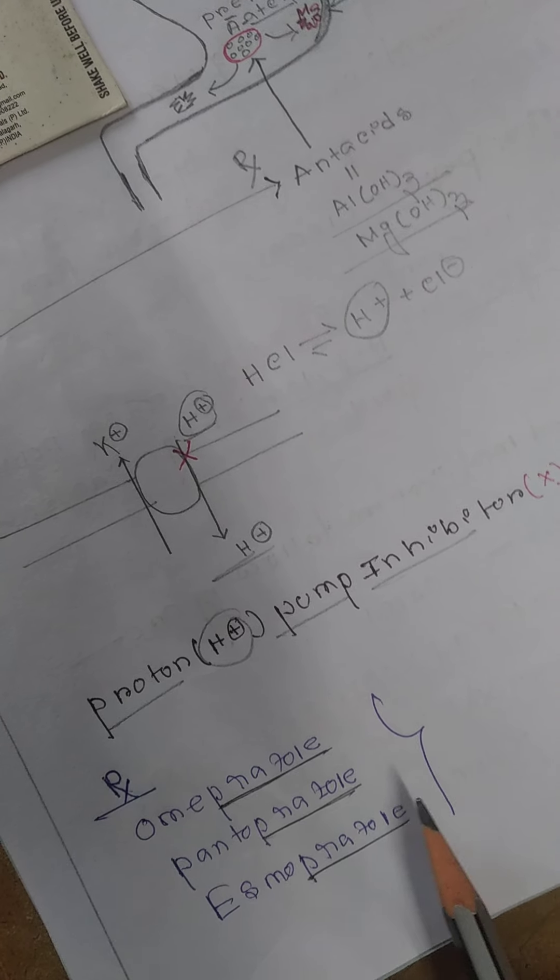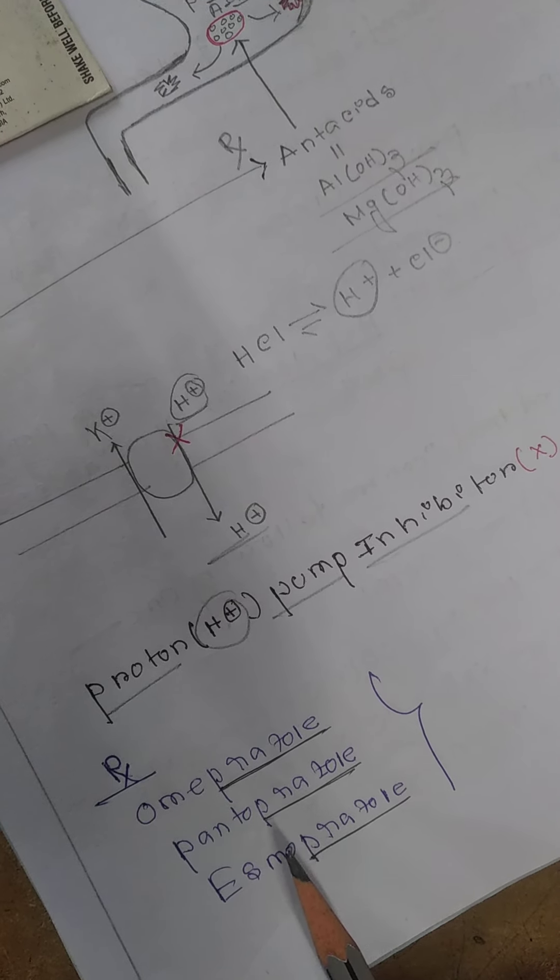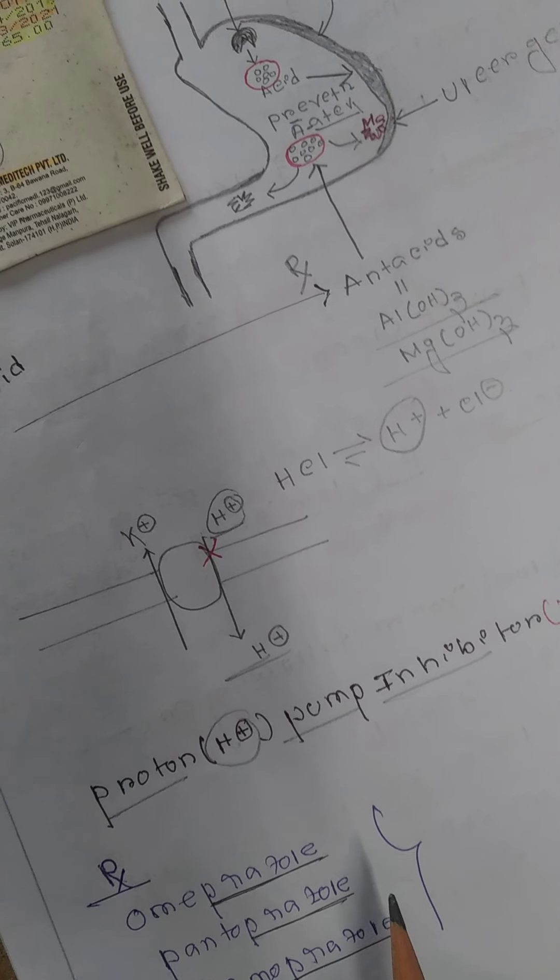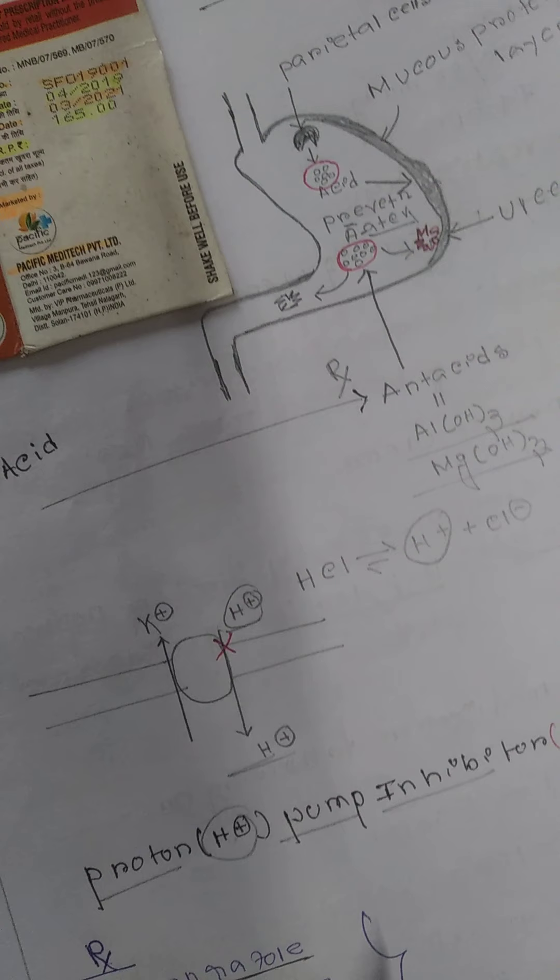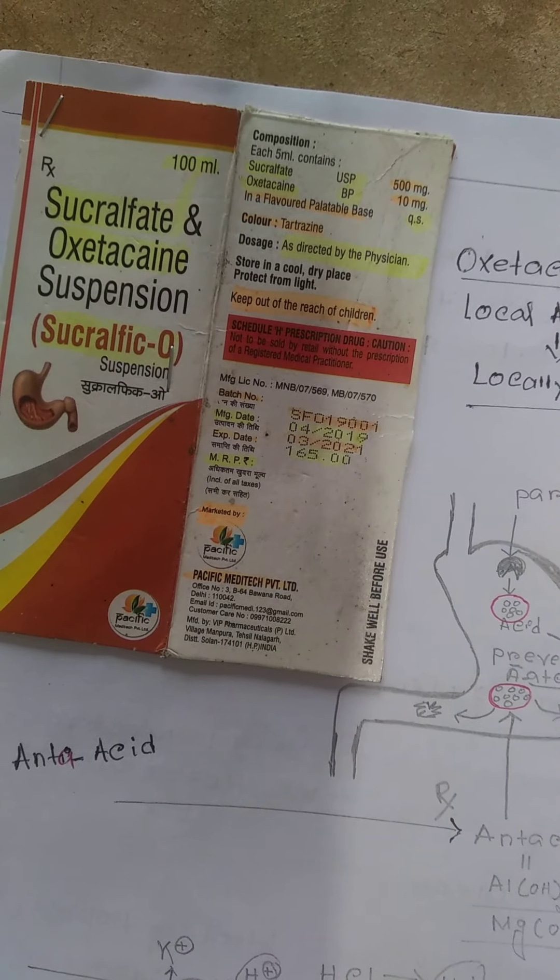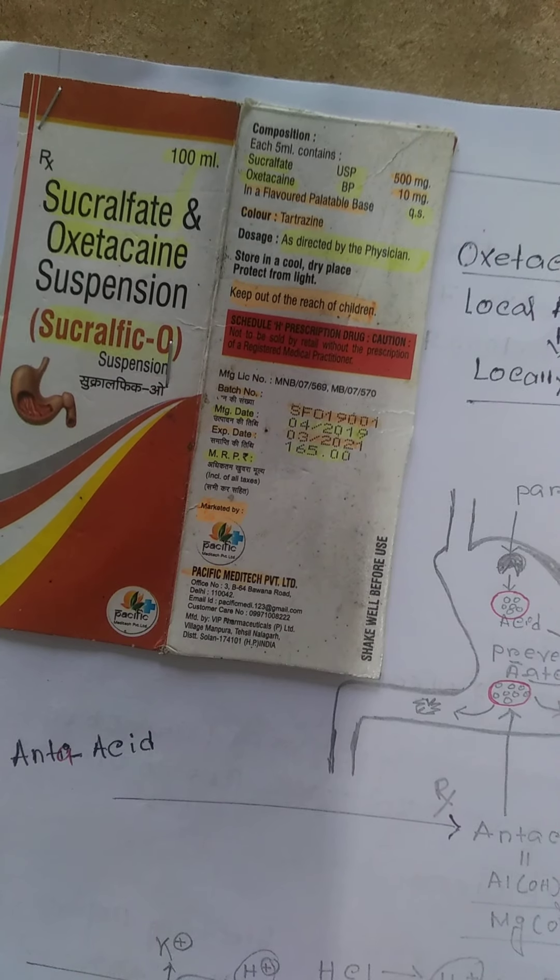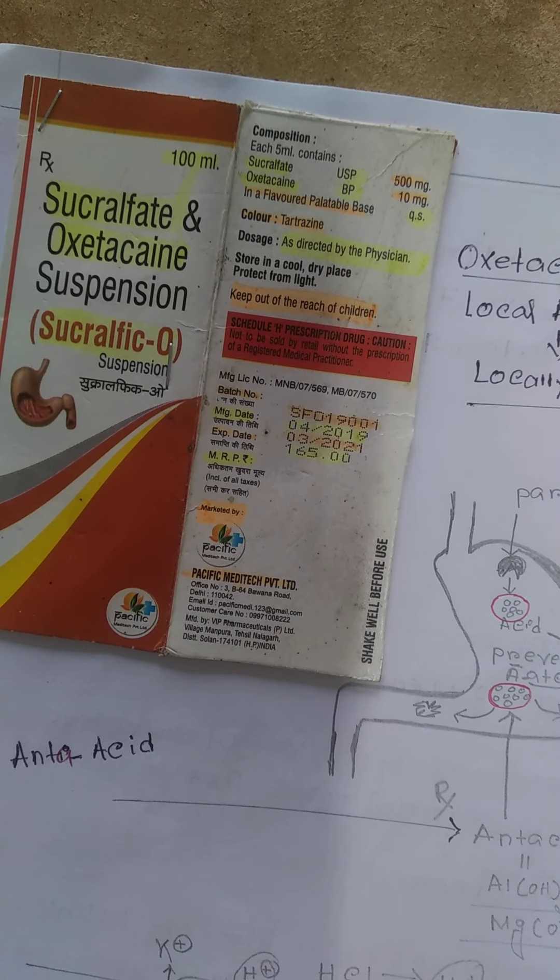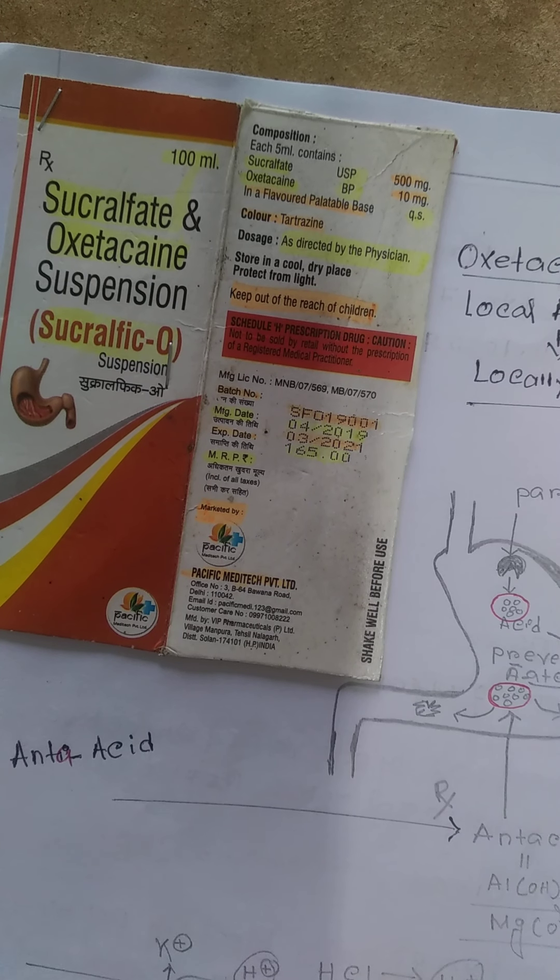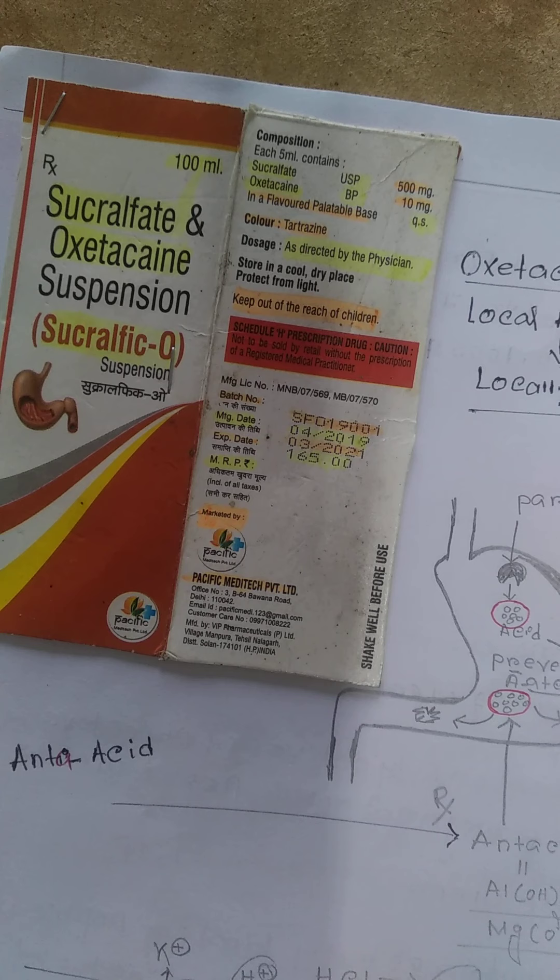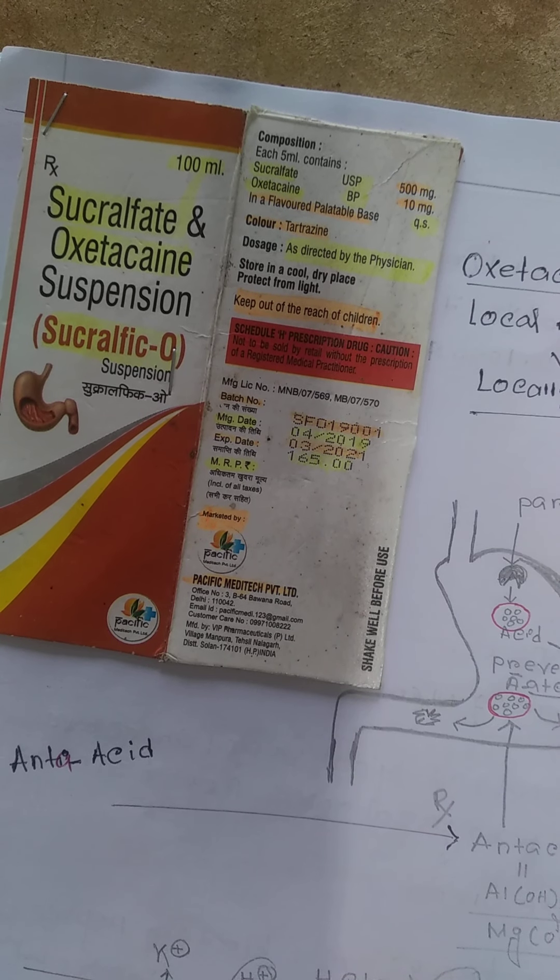Examples are omeprazole, pantoprazole, and esomeprazole. Now, the drug of choice for peptic ulcer that we're reviewing today is Sucralfic O. It contains sucralfate plus oxetocaine. This oxetocaine is a local anesthetic.